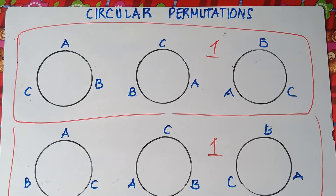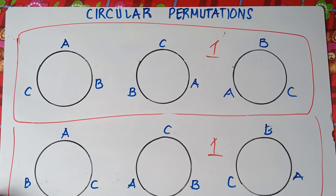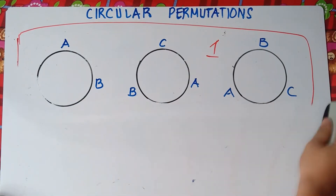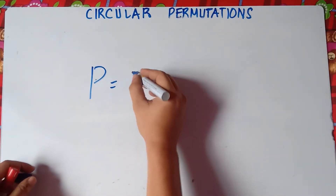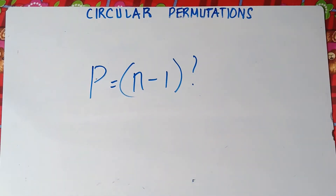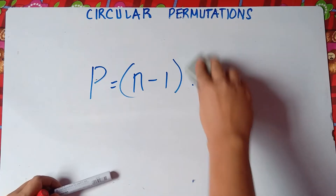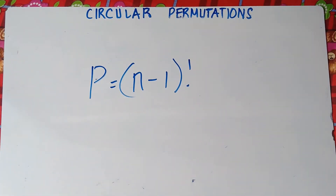So if the teacher asks you in how many ways you can arrange three people on a table, your answer is just two. Two ways that you can arrange three people on a table. The formula for circular permutation is P equals N minus one factorial. I hope you already know factorial — if not, please click the link in the description below on how to solve factorial.